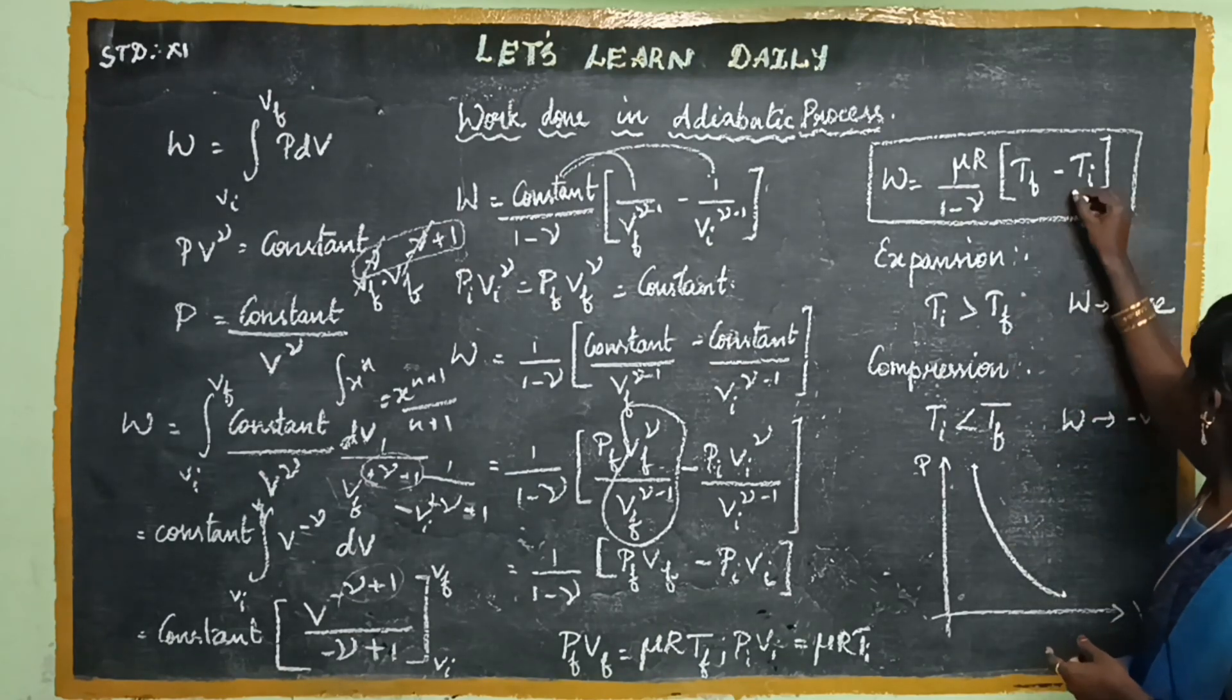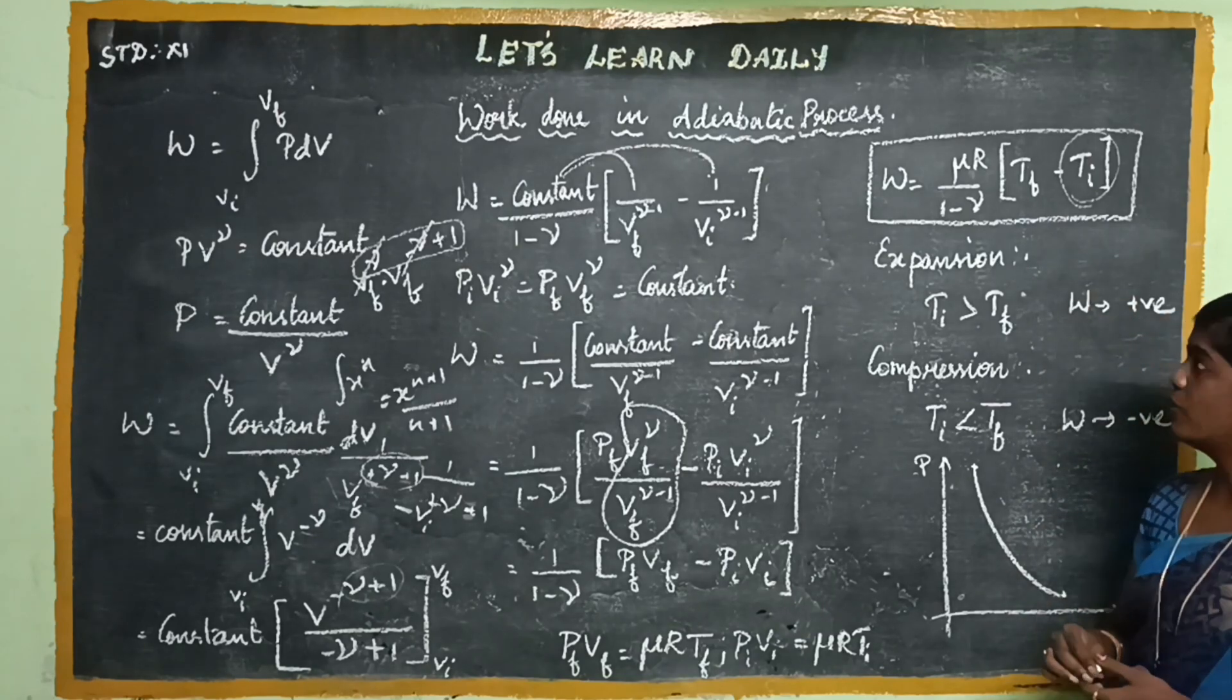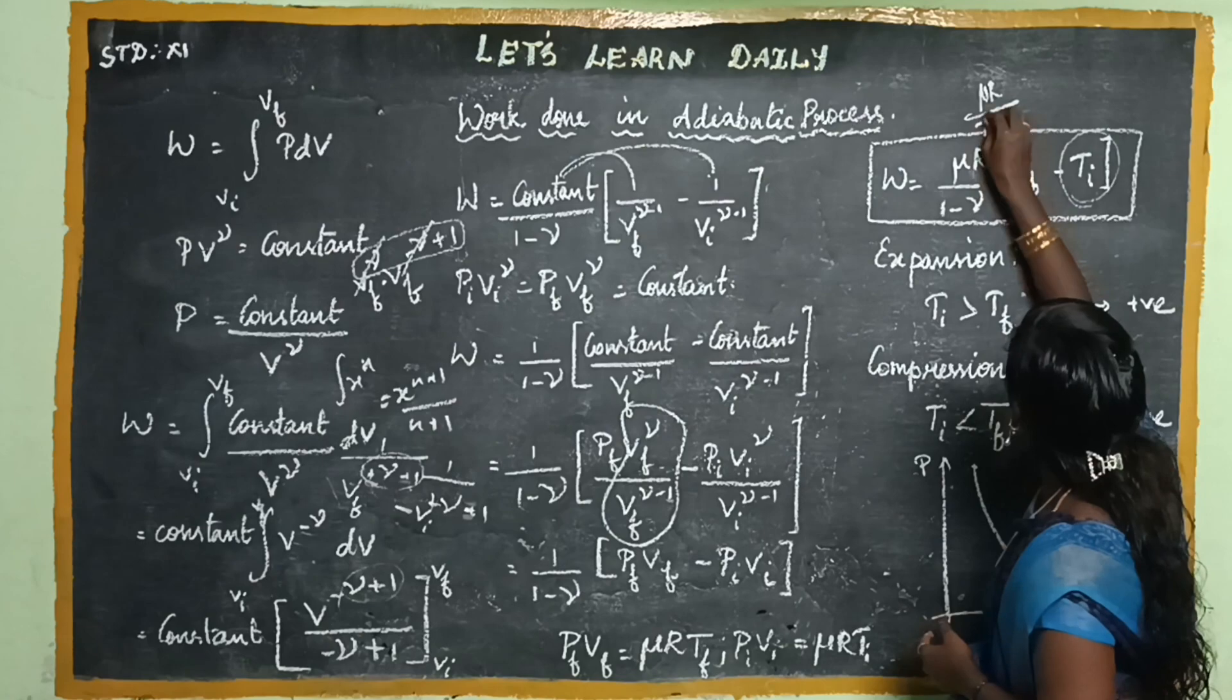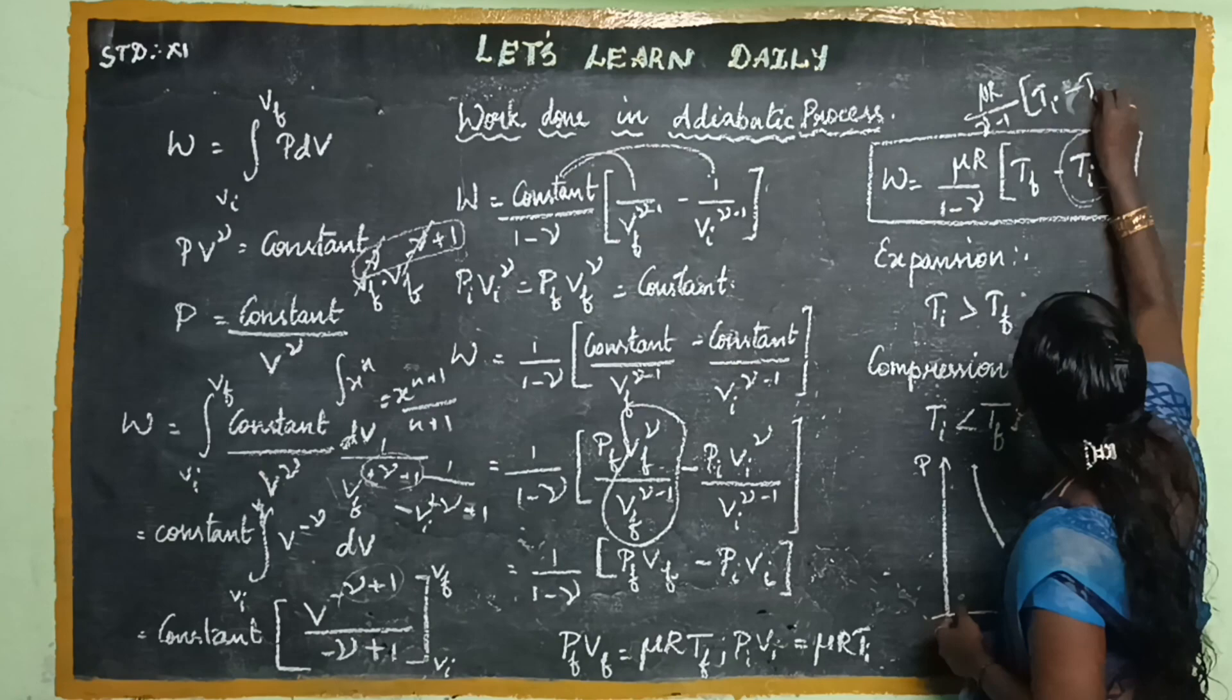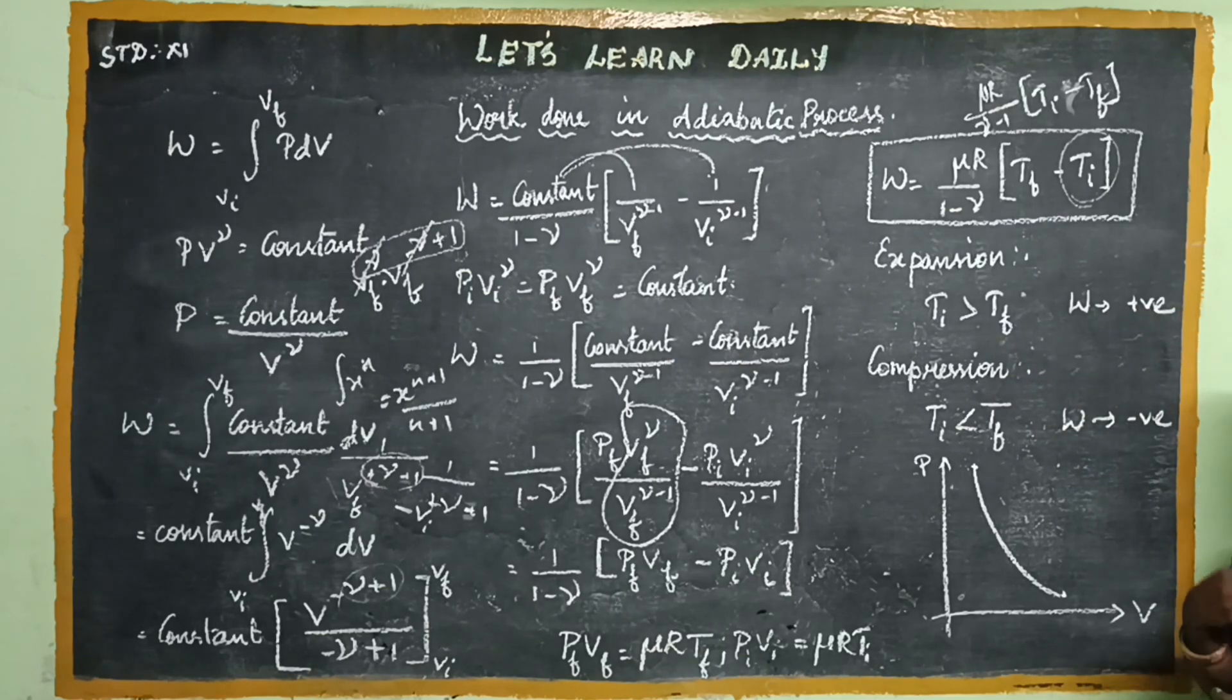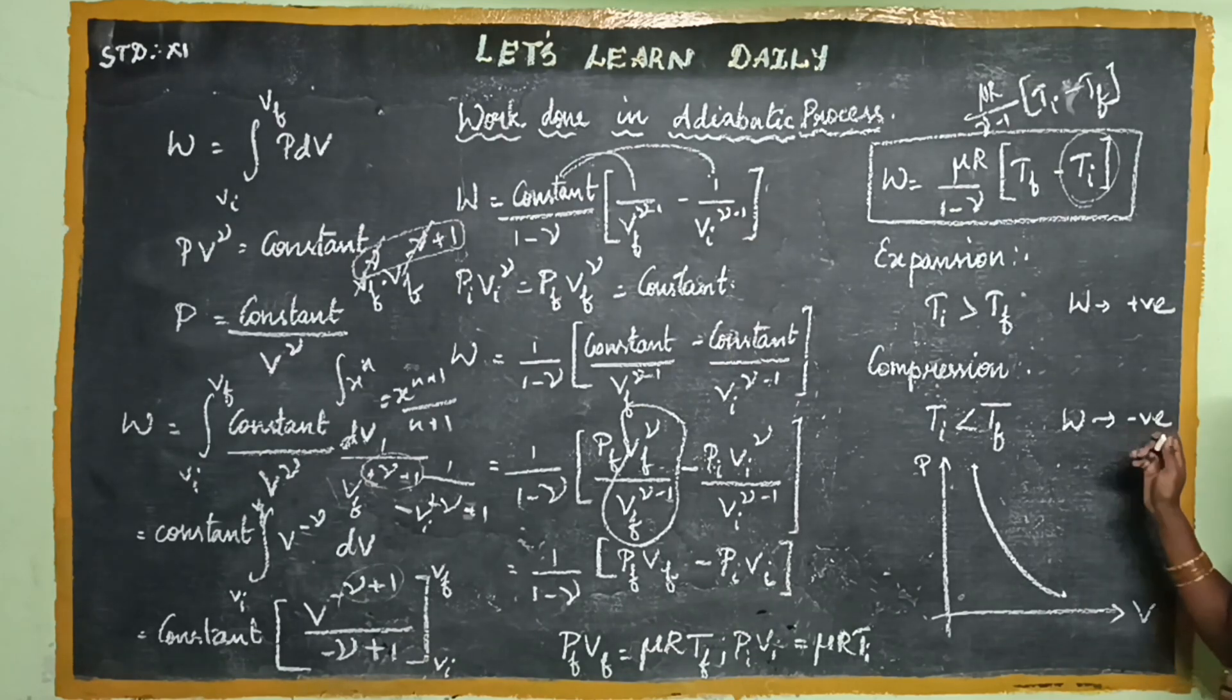If there is positive work done, TI value will be greater. We can change the sign. So if you look at the textbook equation, mu R by (gamma minus 1) into (TI minus TF). When TI value is greater, work done is positive—work done by the system. That is expansion. For compression, TF is greater, so work done is negative—work done on the system.